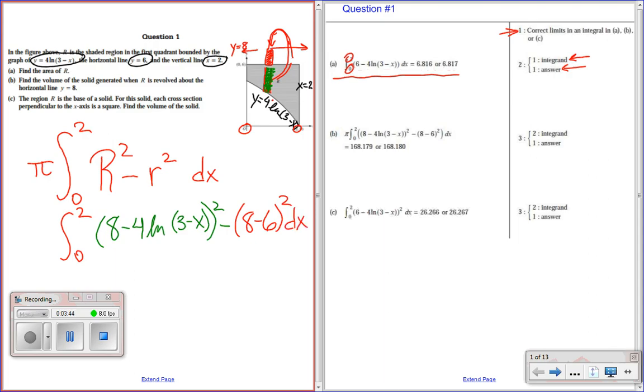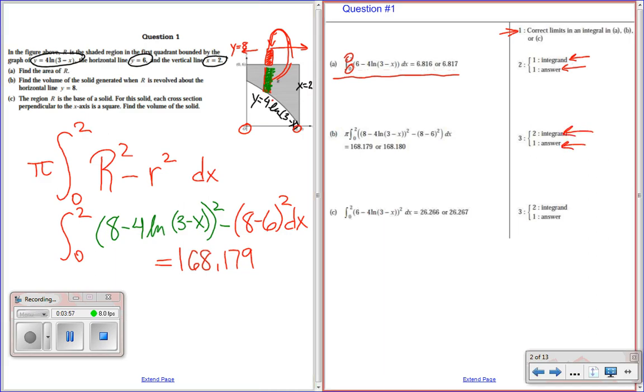Now, again, put this in your calculator and round to three decimal places. So, we get 168.179 or 180. Notice this: you get two points for the integrand and then one point for the answer.